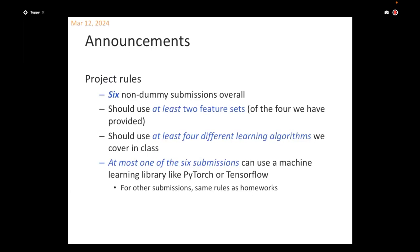Going back to the project rules: you have at least four different algorithms covered in class, and no more than one of your six submissions should involve a machine learning library like PyTorch, TensorFlow, or scikit-learn. If you use PyTorch or TensorFlow, the CAID machine constraint doesn't necessarily apply, because some of these libraries require more computational resources than are available on CAID machines. You're welcome to use some other machine that you have.